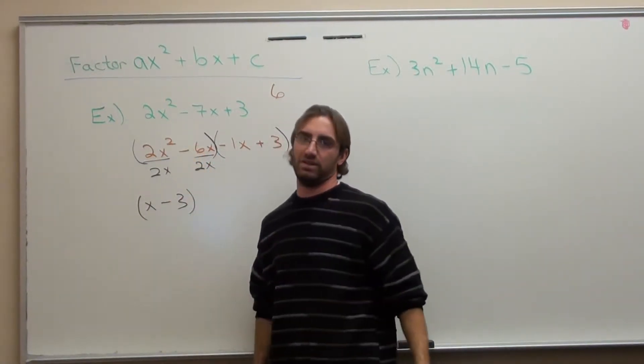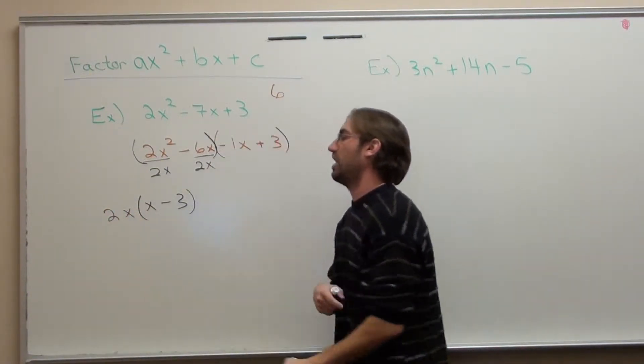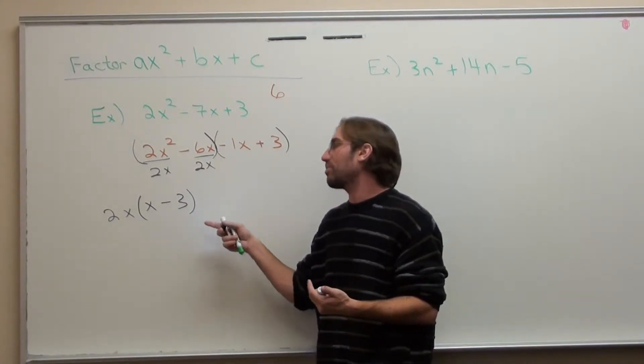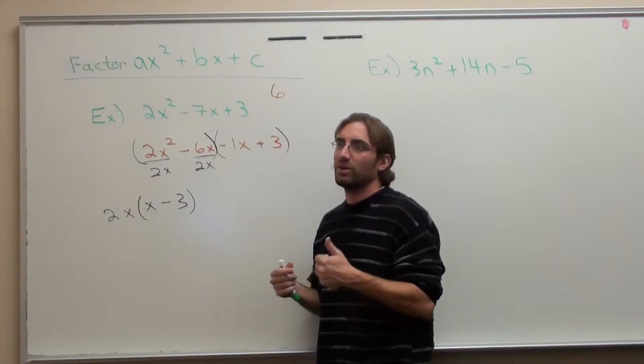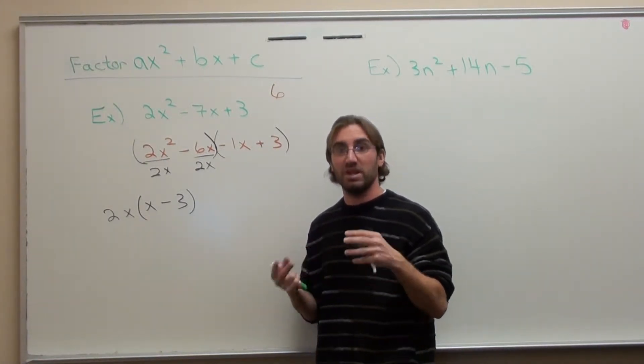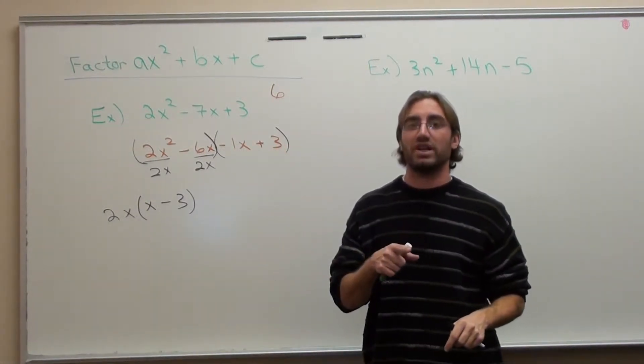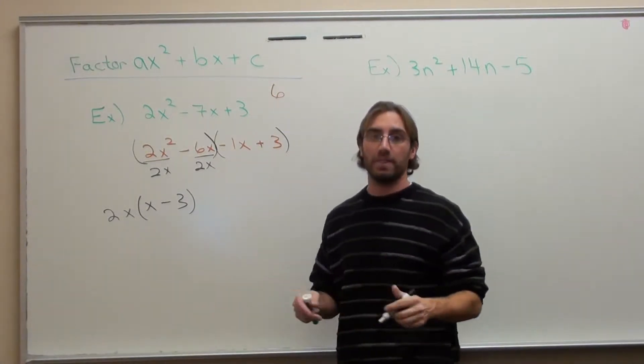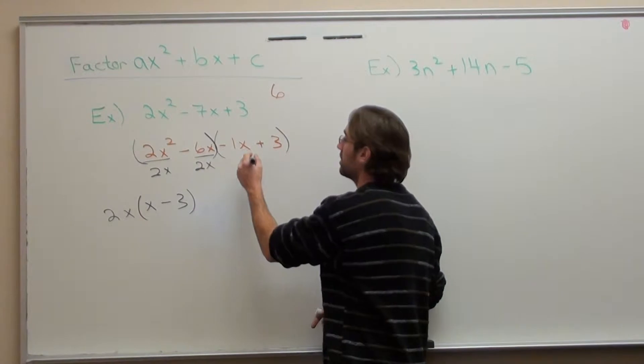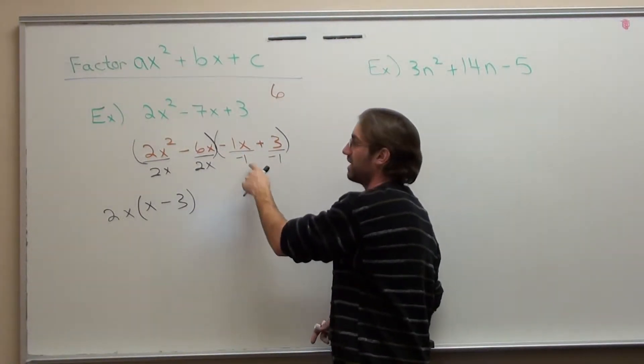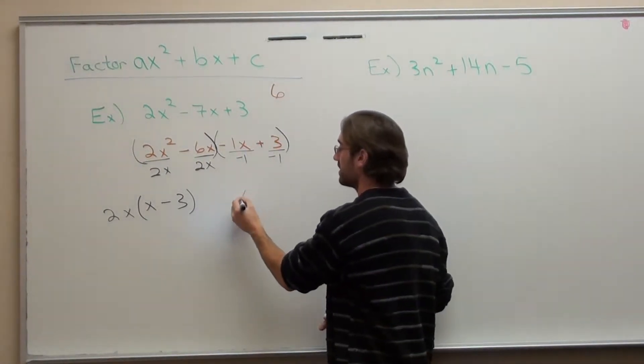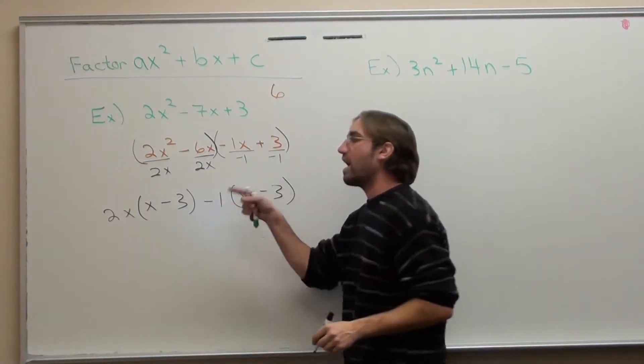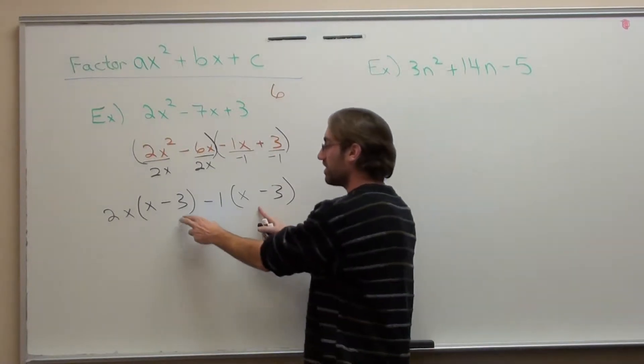Good job. Not quite. What can you take out of -1x and 3? I never want my first term when I factor it to be negative. I want it to be positive. So I want to take out this -1. I'm going to take out a -1. -1x divided by -1 is x. 3 divided by -1 is -3. Put that in parentheses and you have a -1 out in front. That was supposed to happen. You are supposed to have both of these quantities be the same.